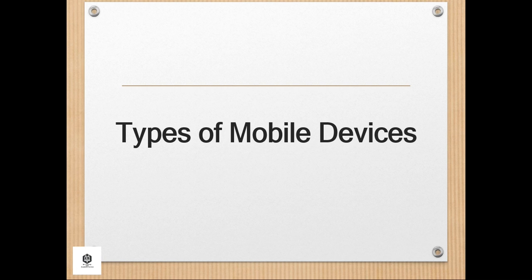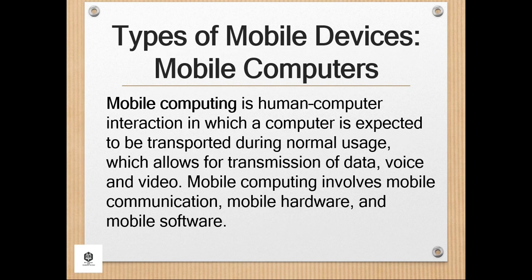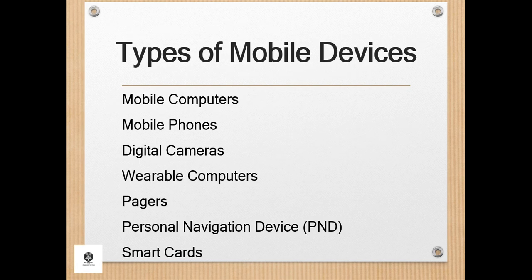Let us proceed to the types of mobile devices. The term mobile device refers to a wide range of consumer electronics. Mobile device typically is used to describe portable devices that can connect to the internet. However, some also classify connected digital cameras and standard MP3 players as mobile devices as well.